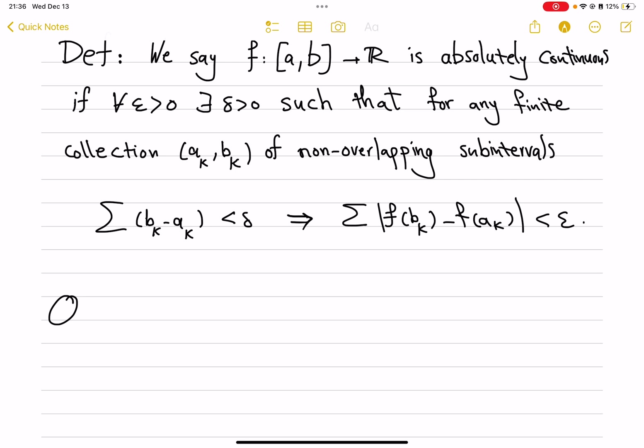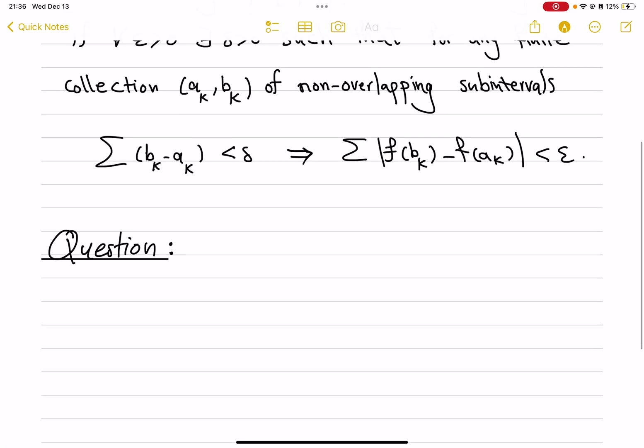The question which Lebesgue and other big mathematicians had was: when do we have that a function can be recovered from its derivatives? So, f(x) minus f(a) equals the integral from a to x of f'(t) dt. Obviously, when x equals a, we have 0 for the integral, so that's why this constant factor has to be there.